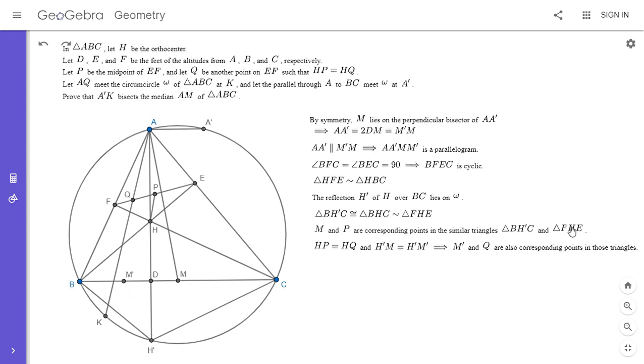So since HP is equal to HQ and H prime M is equal to H prime M prime, basically that means in these two similar triangles, M prime and Q are corresponding points. So basically M prime and Q break up the segments BC and FE in the same ratio. All right.